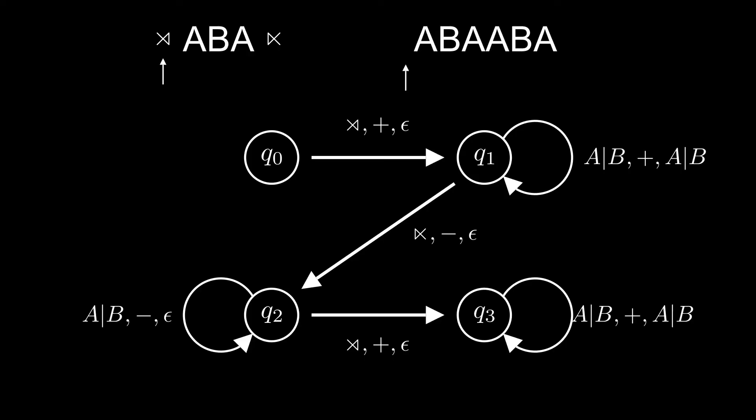Two-way transducers are more powerful, as they're able to perform certain operations of arbitrary length, like copying and reversing. Here's a transducer that copies the input string of As and Bs. Let's see how it copies ABA to output ABAABA.